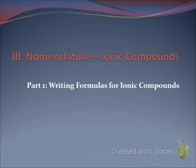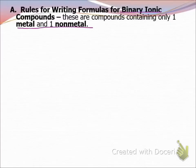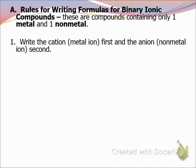We're going to start by writing the formulas first and then we'll do naming. When we are writing formulas, there are a couple of rules to remember. Ionic compounds are a metal and a non-metal. For binary ionic compounds — binary means one metal and one non-metal — the cation, which is positive, always comes first and the anion, the non-metal, is always second.